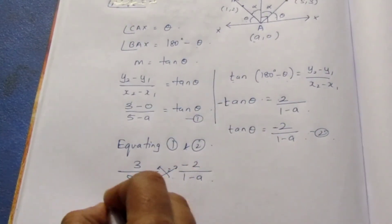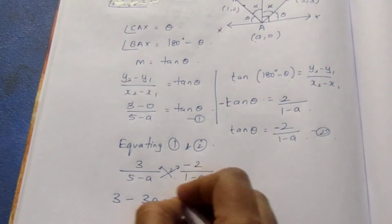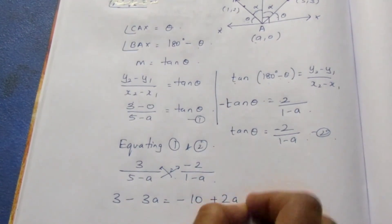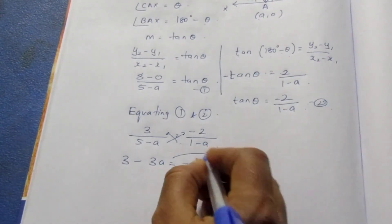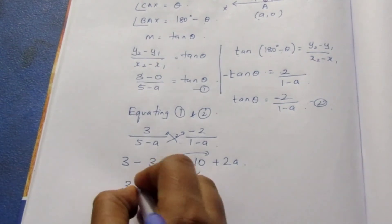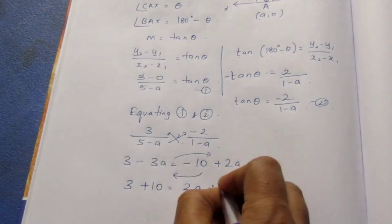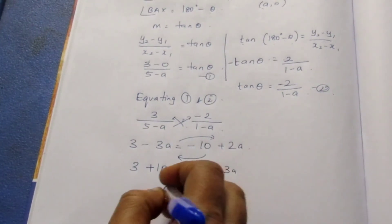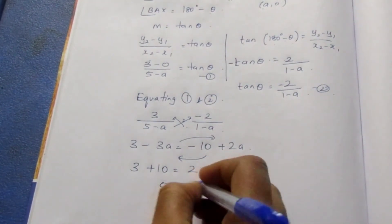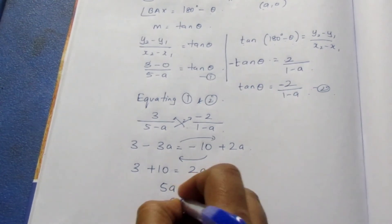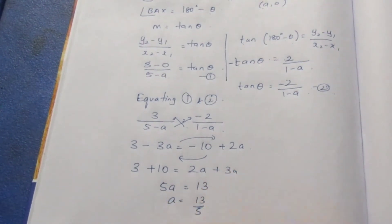Now, this becomes 3 minus 3A equals minus 10 plus 2A. Bring everything to the other side. So 3 plus 10 equals 2A plus 3A. It becomes 5A equals 13. So A equals 13 by 5.